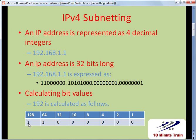Each position is either a 1 or a 0 as a value. If it's a 1, you're calculating that number. So for example, 192 written in binary format is 1, 1, 0, 0, 0, 0, 0, 0. What that means is you calculate the values of 128 and 64 — anything with a 1 associated with it. 128 plus 64 is 192.